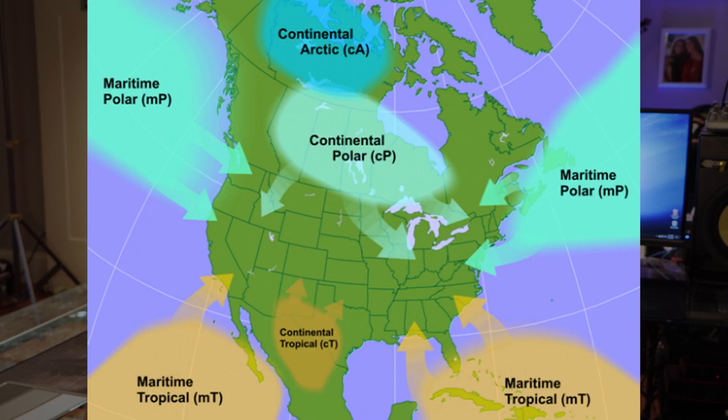The source regions need to be pretty uniform throughout the entire area. This is why you don't usually see source regions forming at the boundary of water and land. The tropical and polar locations are often the most stable for creating air masses as a source region. The tropical regions stay hot and rarely, if ever, will develop snow or frost. The polar regions are much colder and will develop snow, ice, and frost.